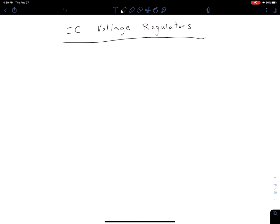Let's continue our discussion of IC voltage regulators. Let's say we're working on a project in the lab and we want a certain regulated voltage, maybe 7 volts.